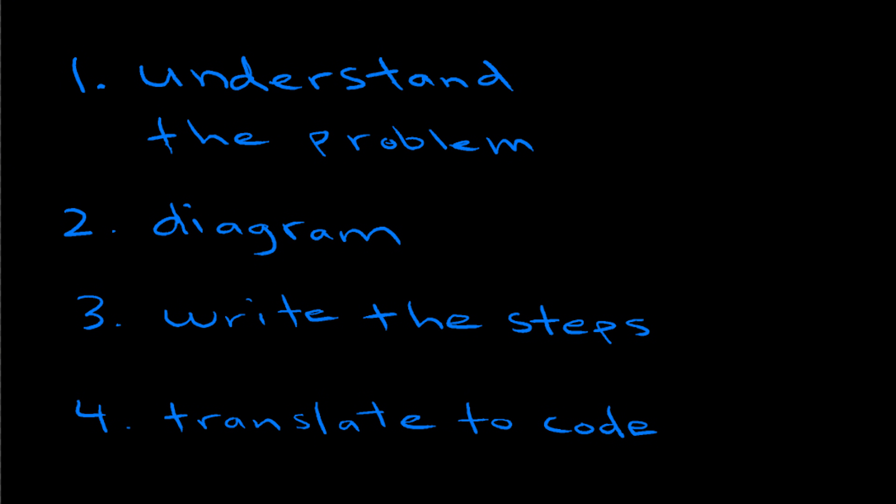Before we start, we need a game plan. Most people think that coding takes up most of the time in a data structures type question, but it's often not the case. So here are the four steps that I use. One is to understand the problem — a lot of times the interviewer will make the question vague on purpose. Step two is diagramming out the problem, where without coding you just figure out the steps needed to solve it. Step three is writing out those steps, basically the algorithm. And step four is just translating those steps into code.